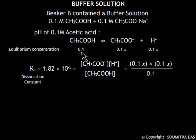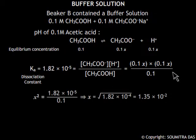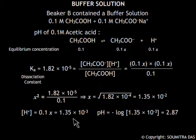Then what would be the pH of 0.1 molar acetic acid? For this purpose we calculate X from this equation which is calculated to be equal to 1.35 into 10 to the power minus 2. Therefore hydrogen ion concentration will be 0.1 into X which is equal to 1.35 into 10 to the power minus 3 moles per liter. This gives a pH which is equal to 2.87.